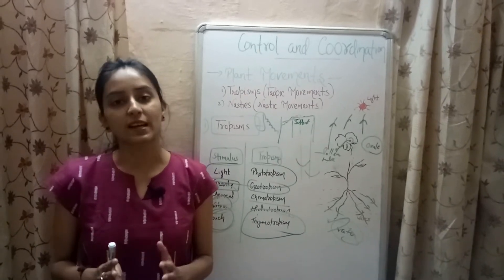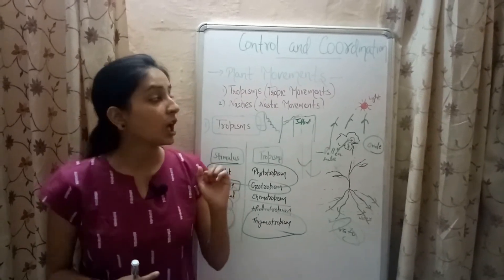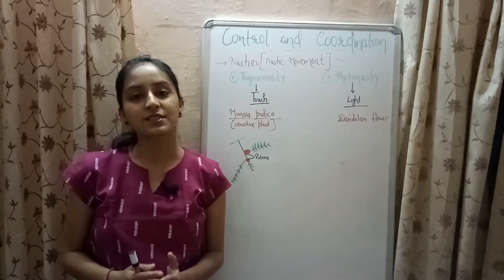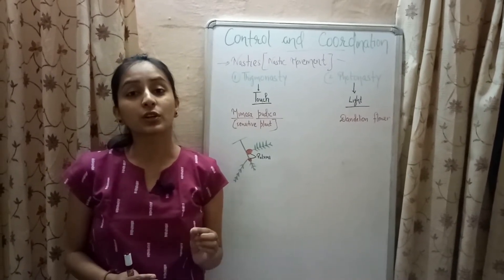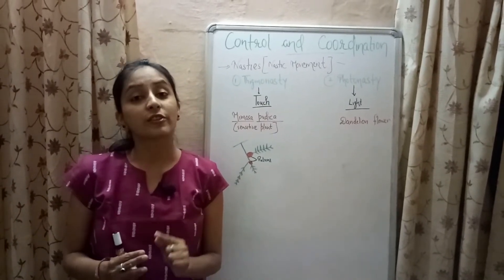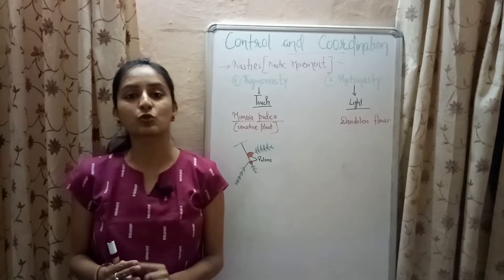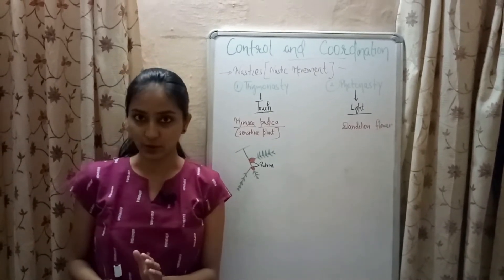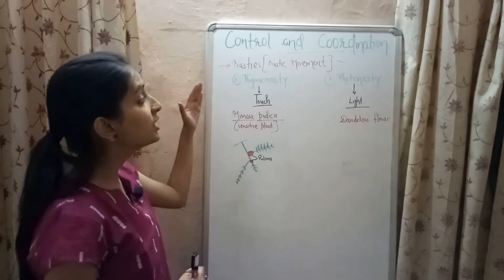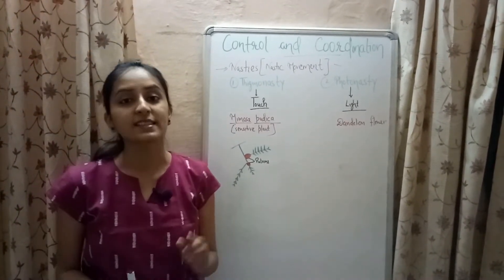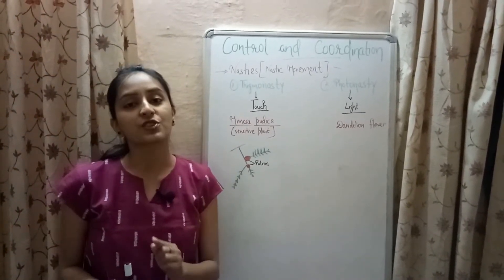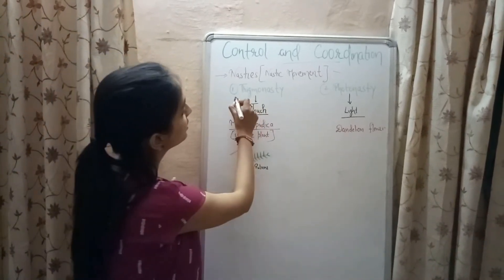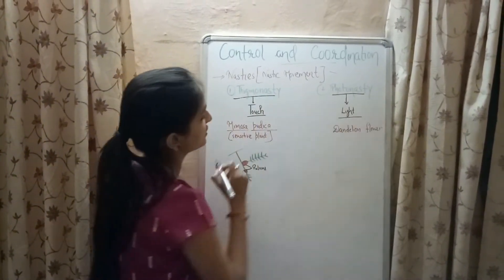So this is how tropic movements occur in plants. Now let's move to nastic movements. Nastic movement refers to growth movement in which the response does not depend upon the direction of the stimulus — that is why it is also known as non-directional movement. Nastic movements are of two types: thigmonasty and photonasty.